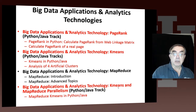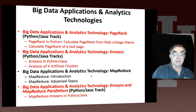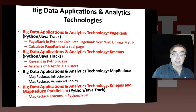Then we have a technology section. We start off with PageRank in both Java and Python. Then we have K-Means in Java and Python, with analysis of four artificial clusters in great detail. We do MapReduce — just an overview — and then MapReduce applied to K-Means, illustrating the basic concepts of MapReduce with the parallel K-Means application.